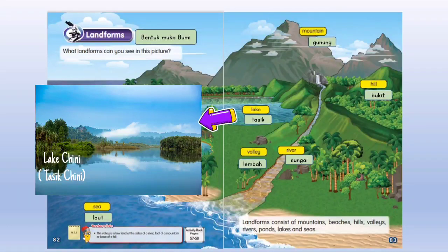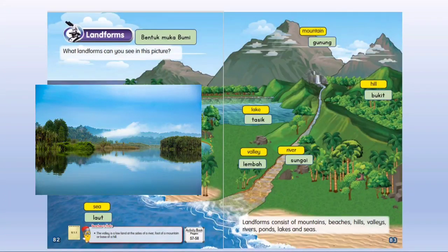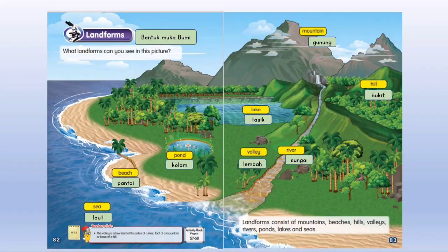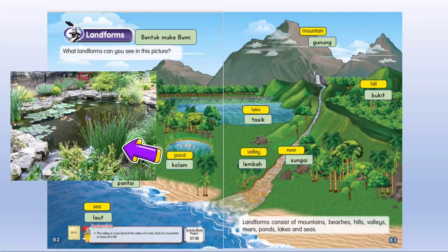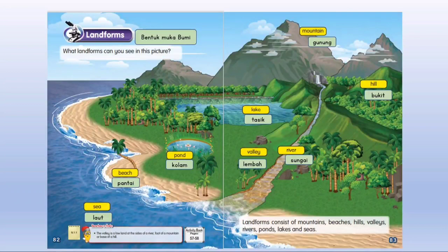Lake — Tasik. A lake is a large area of water surrounded by land. Permukaan air yang dikelilingi oleh daratan. Pond — Kolam. Usually, a pond is smaller and shallower than a lake. Kolam lebih kecil dan cetek berbanding tasik.